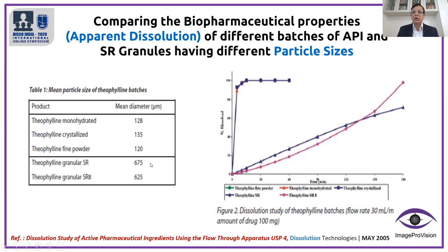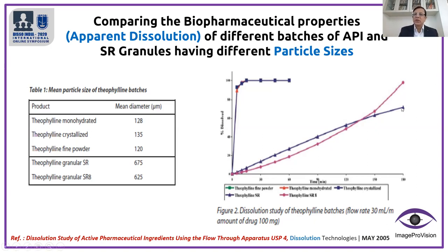The interesting part is the dissolution profile of SR granules. There are two batches: one with 675 micron mean diameter and the other with 625 micron mean diameter. The red profile shows the 625 micron smaller particle size and the black one shows the 675 micron larger size. You can clearly see that the 625 micron particles have reached almost 100 percent dissolution while in the same time the 675 micron particles reached only 80 percent. This establishes the impact of particle size on dissolution profiling.